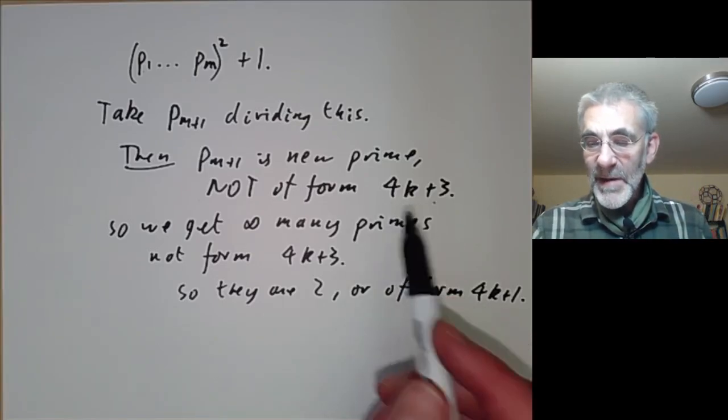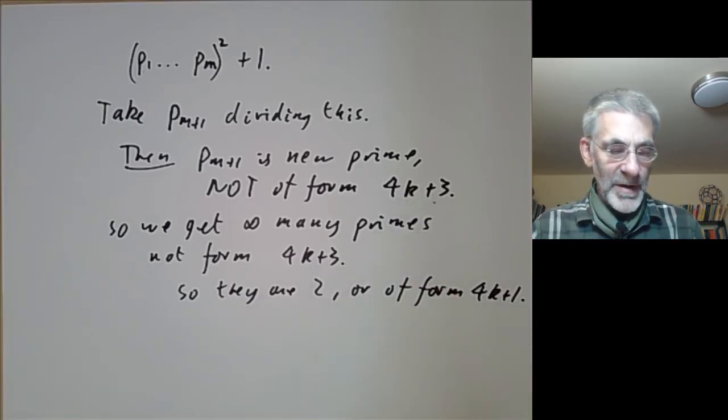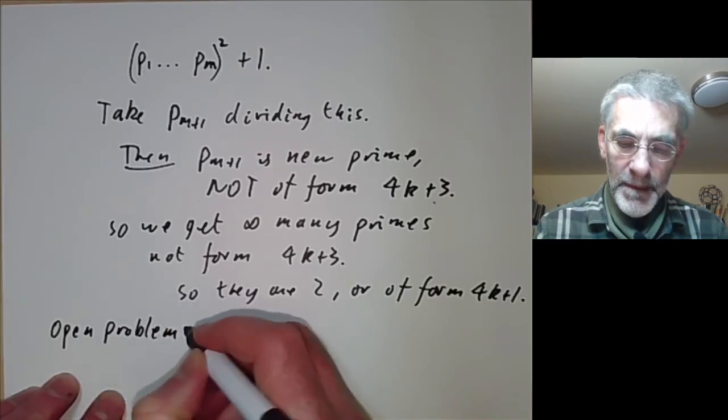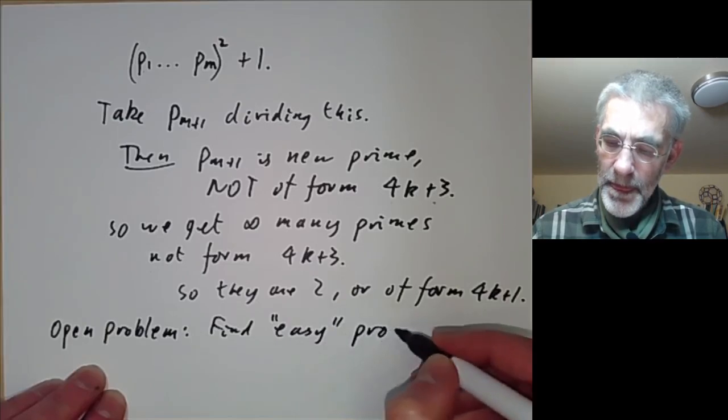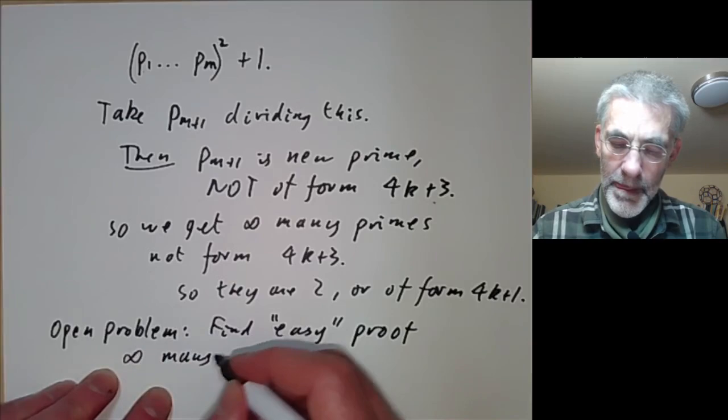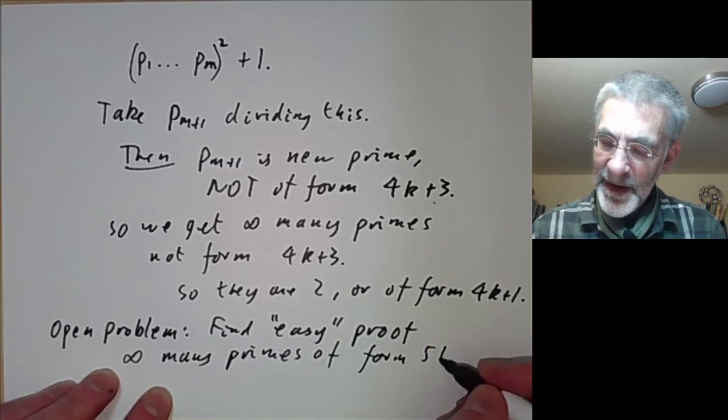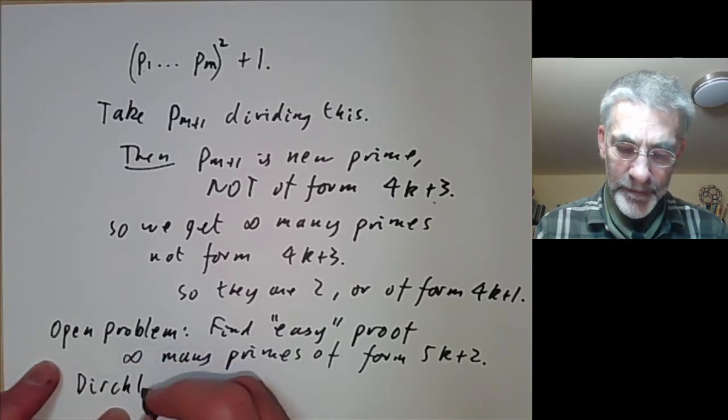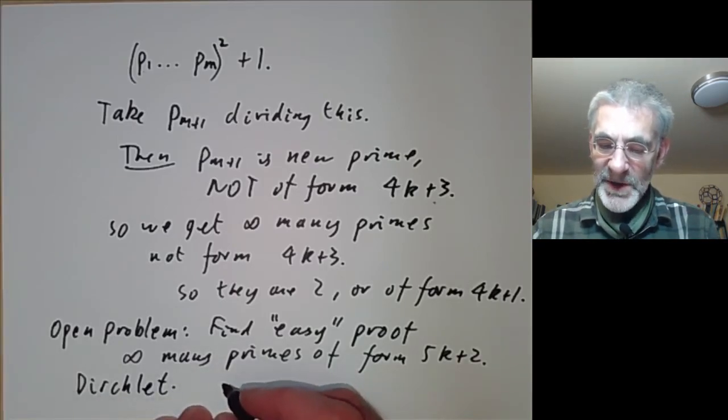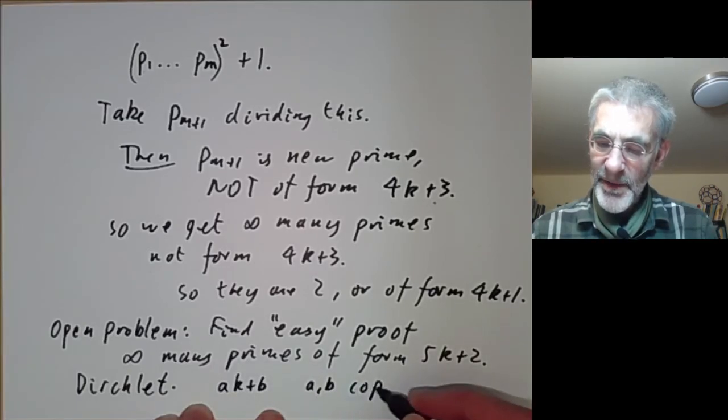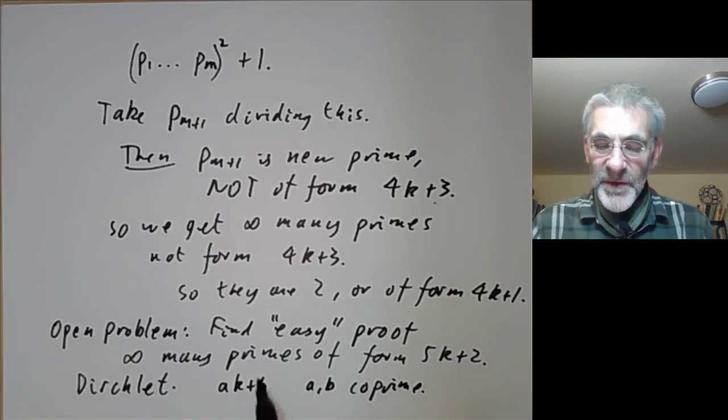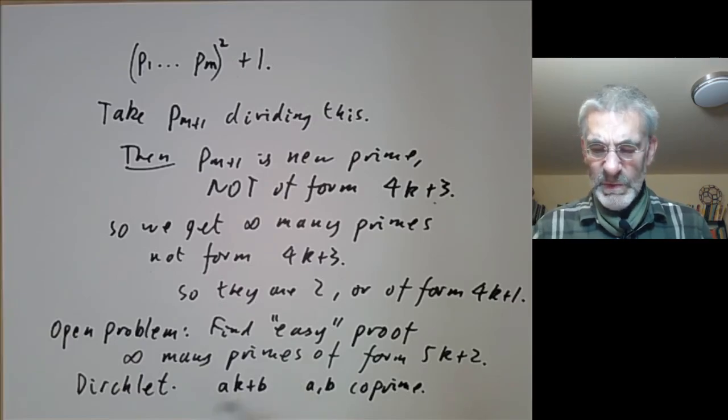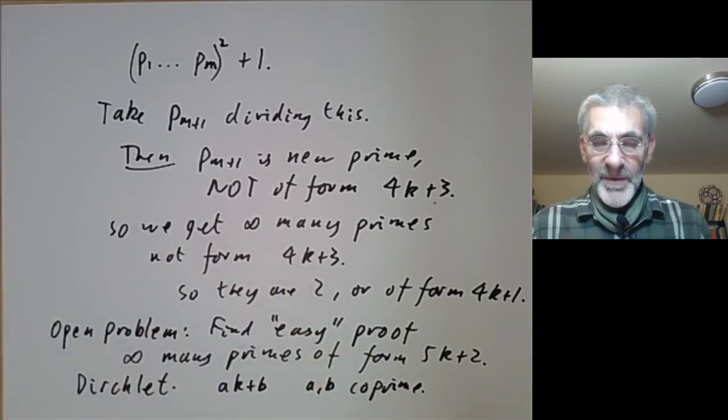So you can use a similar argument to show there are infinitely many primes of the form 3k plus 1 or even 5k plus 1 with a little bit more effort. But as far as I know it's still an open problem, find an easy proof that there are infinitely many primes of the form 5k plus 2. 5k plus 1 you can actually do. This was actually first proved by Dirichlet who proved more generally that you can find infinitely many primes of the form ak plus b whenever a and b are coprime. So he showed there are infinitely many primes in arithmetic progression. So we've proved a few simple cases of Dirichlet's theorem by using variations of Euclid's original proof. But there's no known easy method that works apart from these cases and a few more cases.